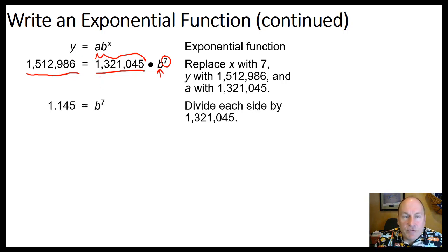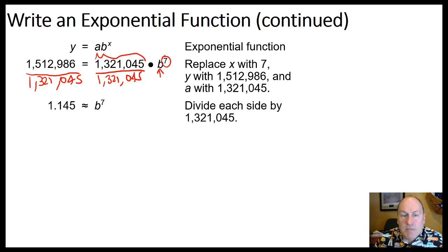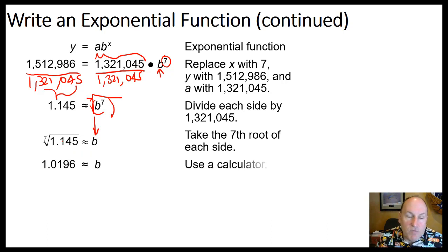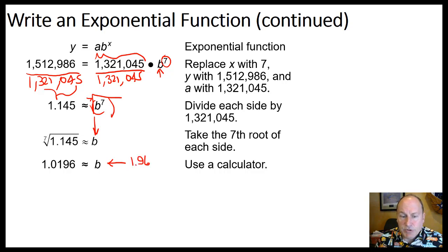We divide both sides by 1,321,045 to isolate the base. In solving exponential equations, we've got to isolate that base by getting rid of anything else. Dividing gives us approximately 1.145 equal to b to the 7th power. We can undo the 7th power by taking the 7th root of both sides. The 7th root of 1.145 is approximately 1.0196, which means Capital City's population grew at about 1.96% per year from 2010 to 2017.